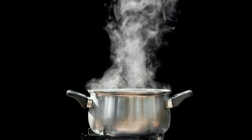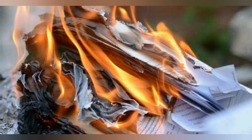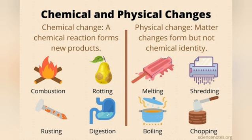In the case of burning paper, it changes to carbon dioxide and other substances. We cannot get back the paper after burning, as there is a change in its chemical nature — it is called a chemical change. In a chemical change, a chemical reaction forms a new product, for example rusting of iron or burning of paper. In a physical change, matter changes form but not its chemical identity — for example, melting, boiling, or chopping. A physical change does not form any new products.